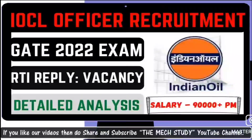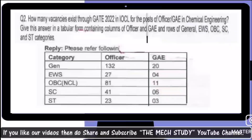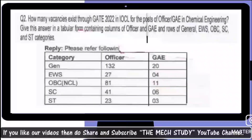Based on the RTI details, we will get the details here. How many vacancies exist in GATE 2022 in IOCL for the post of Officer and Graduate Apprentice Engineer (GAE) in chemical engineering? The answer is given in tabular form with columns for Officer and GAE. Please note this is only for chemical engineering.